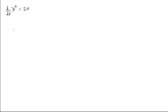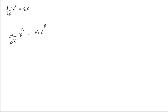The power rule is written like this: d/dx of x to the n, talking about powers here, is going to be equal to n times x to the power of n minus 1. That's all it is — it's really simple.